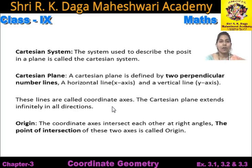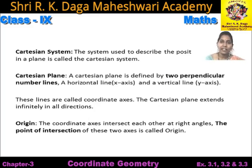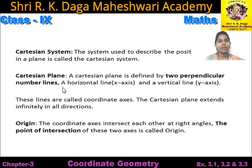These lines are called coordinate axis. Yeh jo lines hum le rahe hain, number lines jaise ki hamne x-axis aur y-axis se represent kiya, yeh coordinate axis kahte hain. The Cartesian plane extends infinitely in all directions. Number line positive side me bhi infinitely numbers tak jati hai aur negative side me bhi. Yeh Cartesian plane bhi charo direction me infinitely numbers tak ja sakta hai.